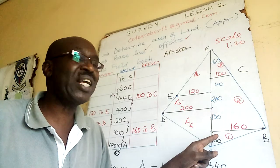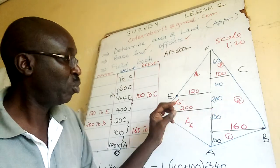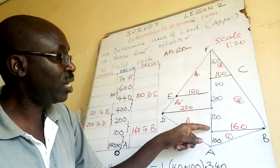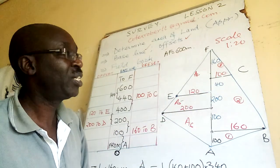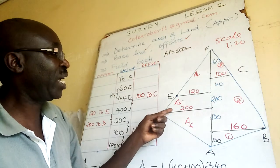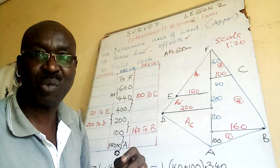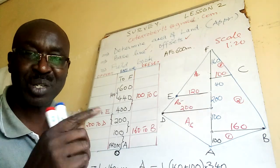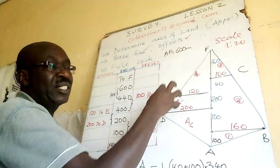Area one is a triangle; area two is a trapezium — you must know the two parallel sides are 160 and 100, and the distance between the parallel sides is 100. Area three is a triangle. Area four is a triangle. Area five: 120 plus 200, the sum of parallel sides, and the distance between the parallel sides is 200, then times a half. All these formulas are now in the book.